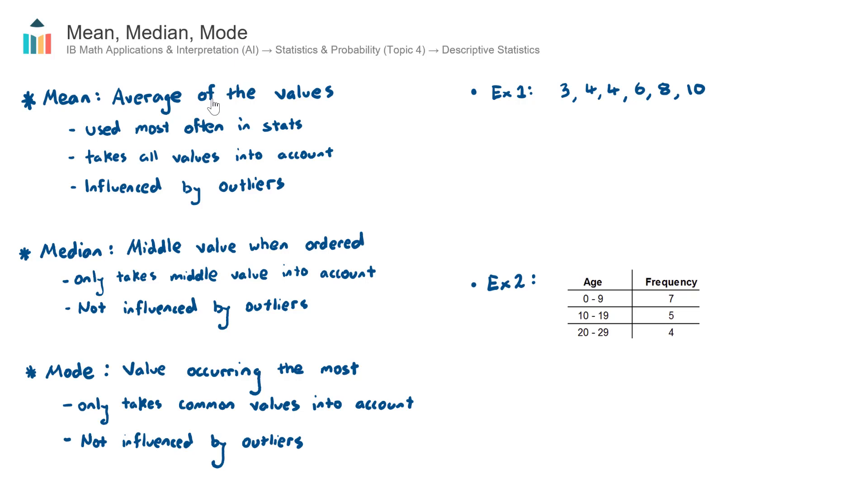The mean is the average of the values, and this is the most common measure. If you're in the diploma program in the AI course, you've probably come across average quite a bit already. The positives are that it takes all the values into account. One negative is that it is easily influenced by outliers.